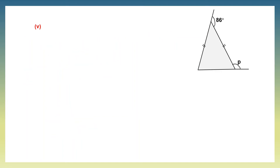Question 5. Here we have angle p to find. We're going to use the property of the exterior angle, or the property of adjacent angles in a linear pair. The base angles of this isosceles triangle are the angles opposite the equal sides. Let the base angles be x.